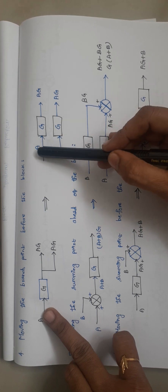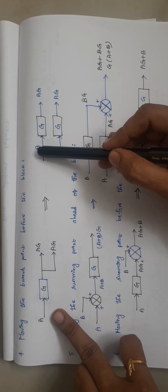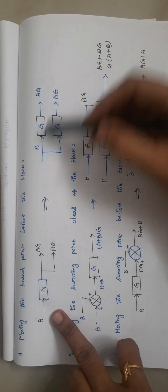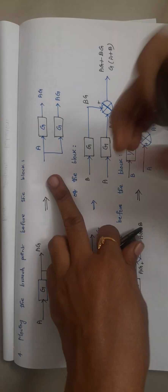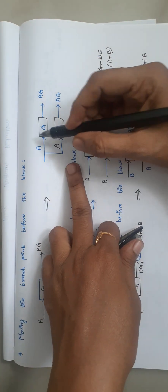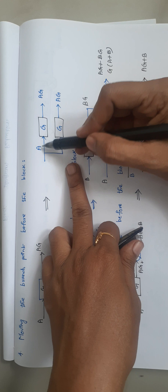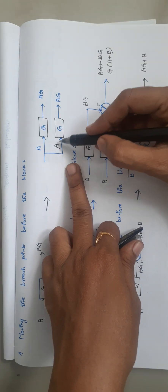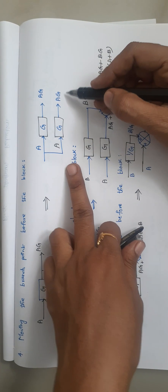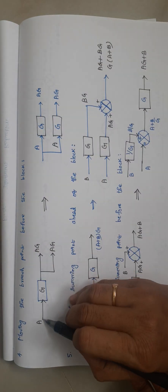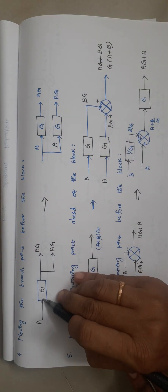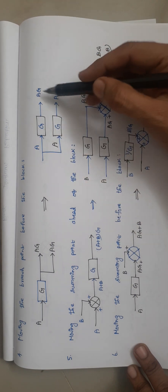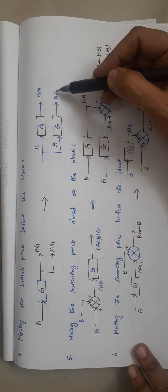Here the input is A and the respective outputs are A·G from the main path, and A·G from the branch (since A is given as input and multiplied by G, giving A·G). In the original diagram the input is A and output is A·G; similarly in the modified diagram the input is A and the outputs are both A·G — the results match.